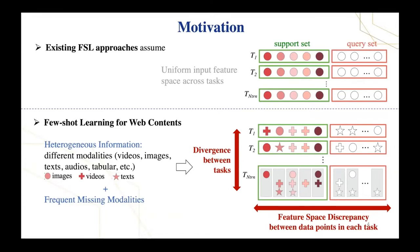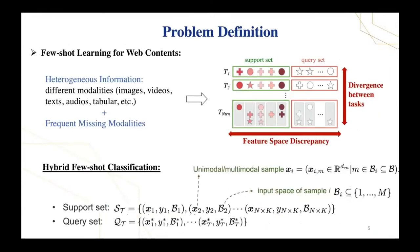We formally define such few-shot learning setting as hybrid few-shot learning. In this problem setting, each data sample is unimodal or multimodal web concept, which is naturally heterogeneous and difficult to collect a complete set of modalities.